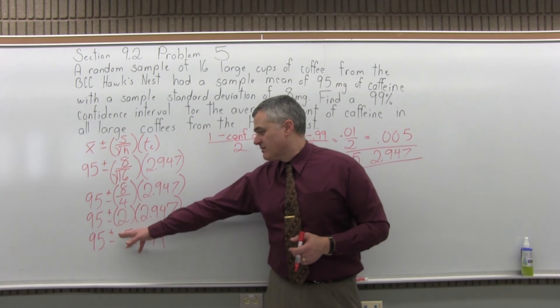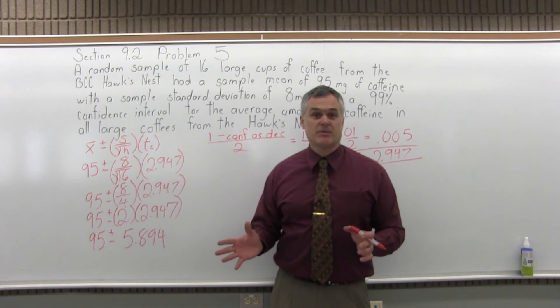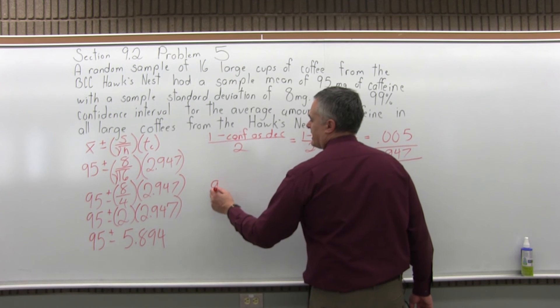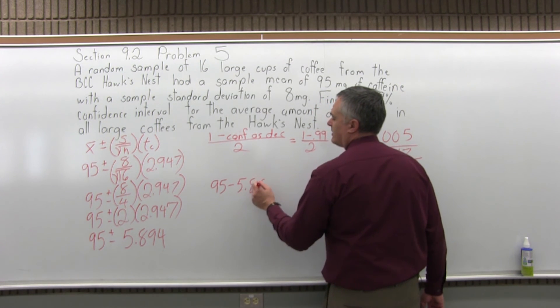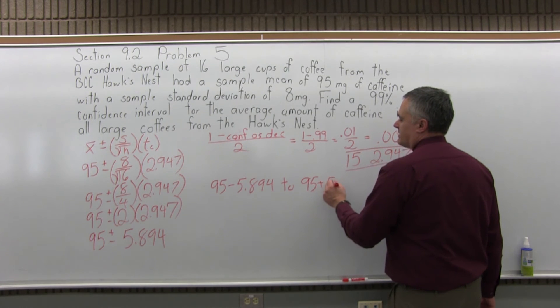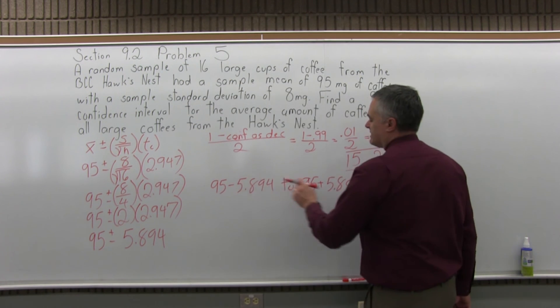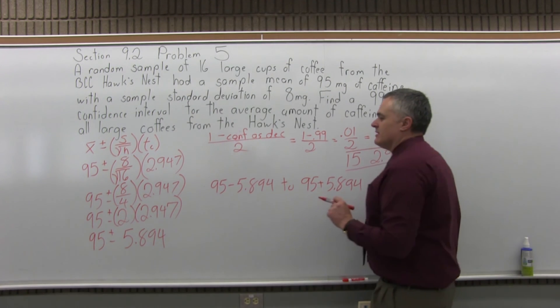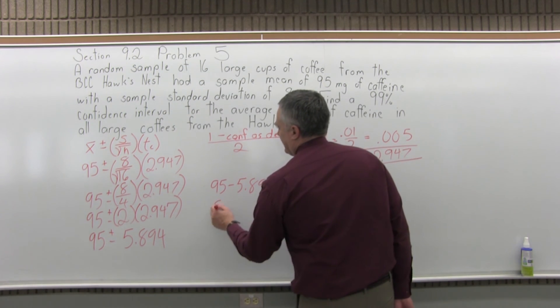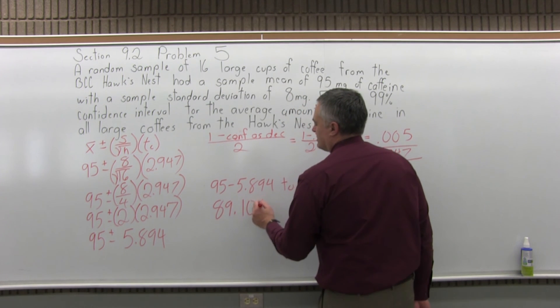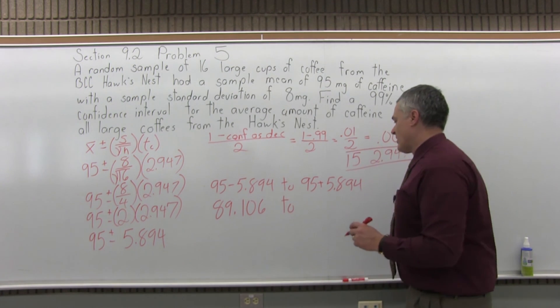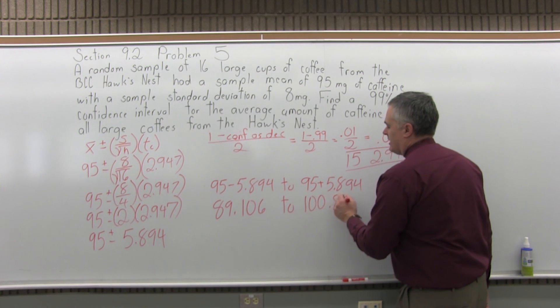So that 5.894 is what you would call your margin of error. And once you have that one number of value after your plus and minus, you can split the formula into a separate plus and a separate minus to find the low end and high end of your confidence interval. So the low end of the confidence interval will come from the x̄ 95 minus the margin of error, 5.894. The upper end will be the x̄ of 95 plus the margin of error, 5.894. On the low end, when I subtract 95 minus 5.894 will be 89.106. And then the upper end will be 95 plus 5.894, which will be 100.894.